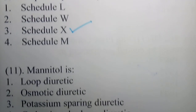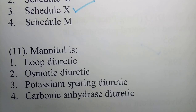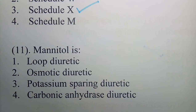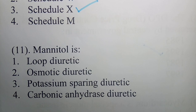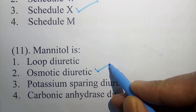Question 11: Mannitol is - options are loop diuretic, osmotic diuretic, potassium-sparing diuretic, carbonic anhydrase diuretic. The correct answer is option 2 - osmotic diuretic. Mannitol comes under osmotic diuretics.